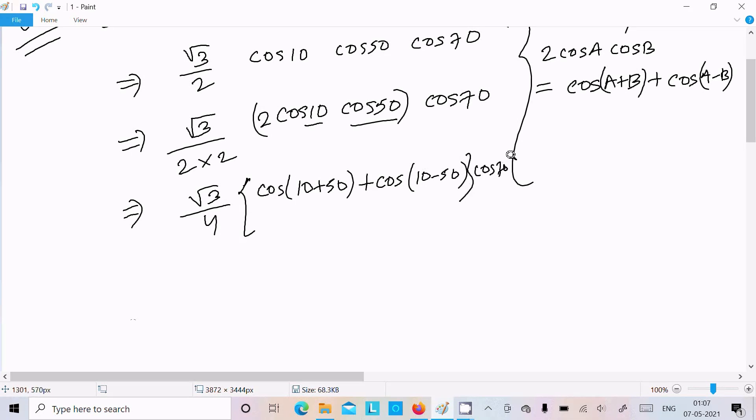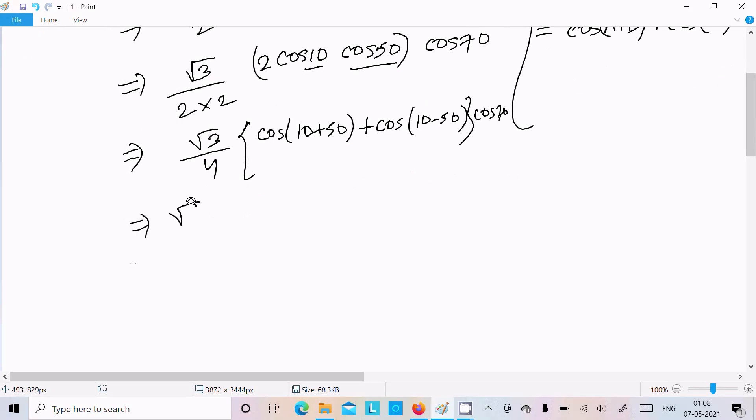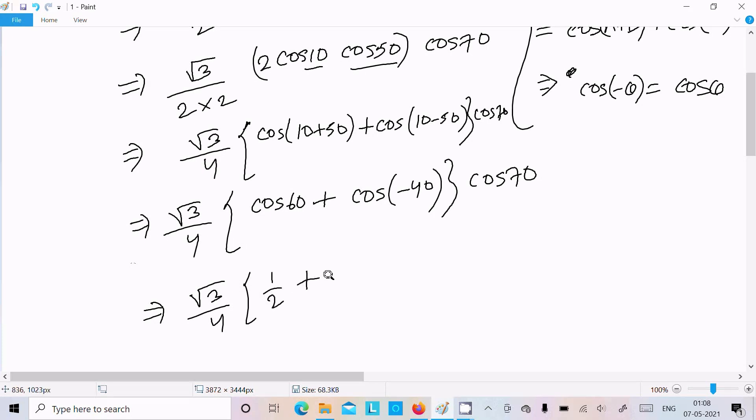cos70. And here cos70, cos60, cos40, cos70. Write that. Now thereafter there is a formula called cos minus theta equal to cos theta. So here root 3 by 4, cos30 value is 1 by 2.